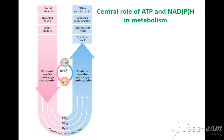In anabolism, the reaction is endergonic — energy is taken in from the environment — which forms ATP from ADP, as shown in the diagram. Mechanical work, osmotic work, and other cellular work can also be done by utilizing stored or ingested food energy.